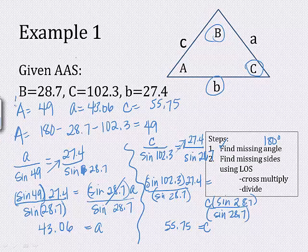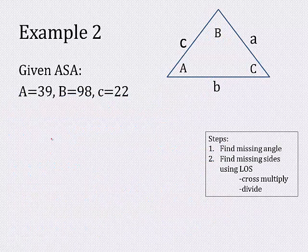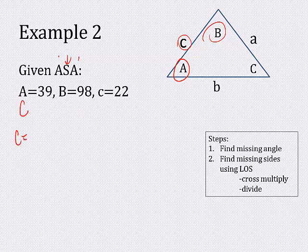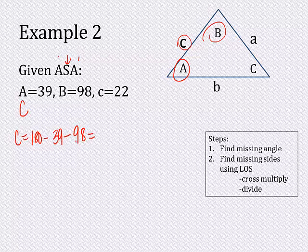You may not have calculators at home, but there are some online you could use. Either way, you should understand the process. Now let's try example two: given two angles and the included side — the side between them. Given big A, big B, and little c. Work through it the same way — find the missing angle first. Big C equals 180 minus 39 minus 98, which gives 43 degrees.